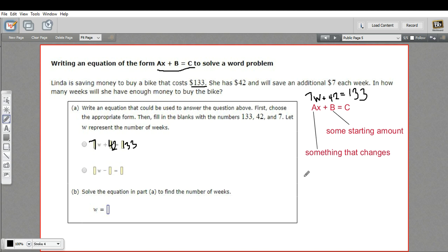So to solve this equation, I'll just rewrite it down here. 7w plus 42 equals 133. We want to subtract 42 from both sides.